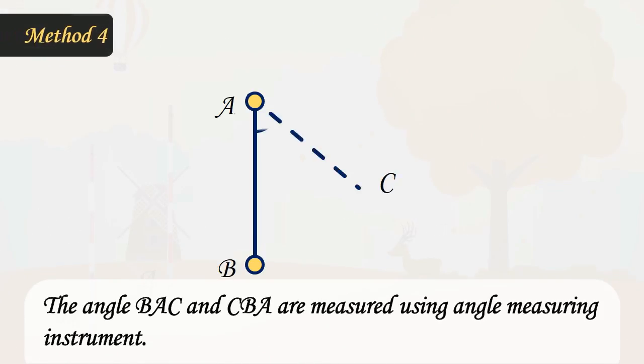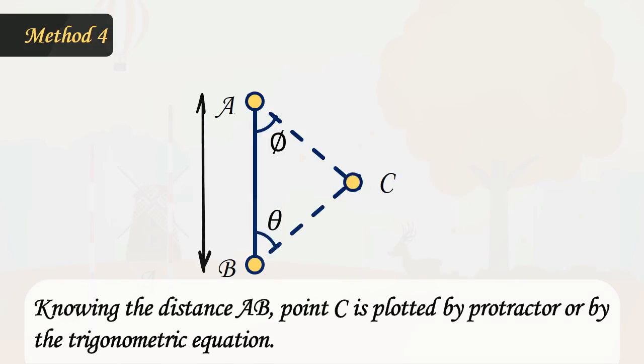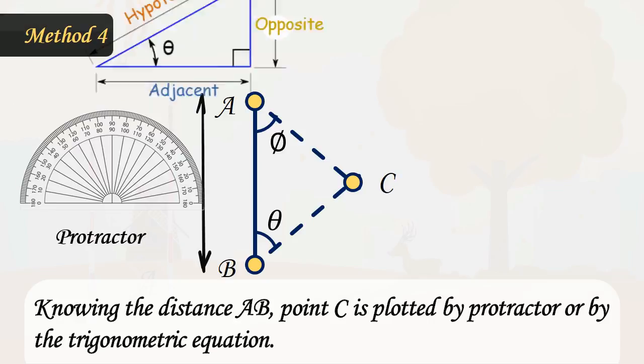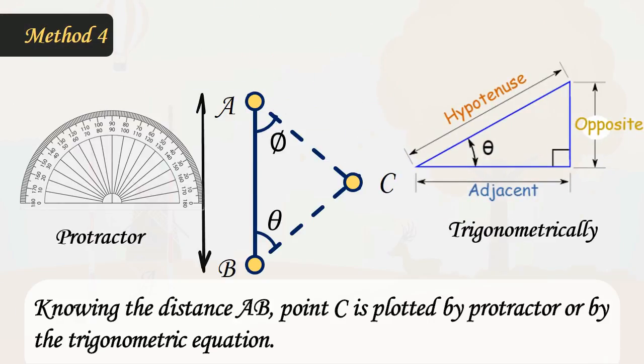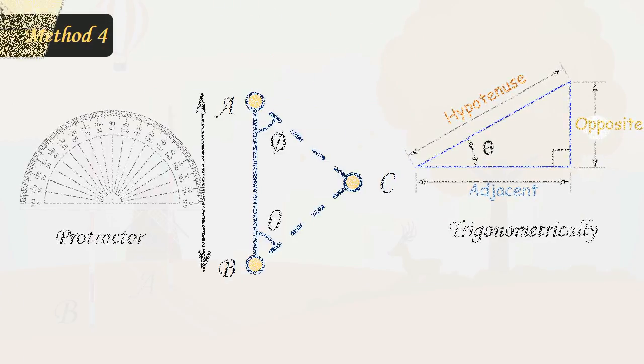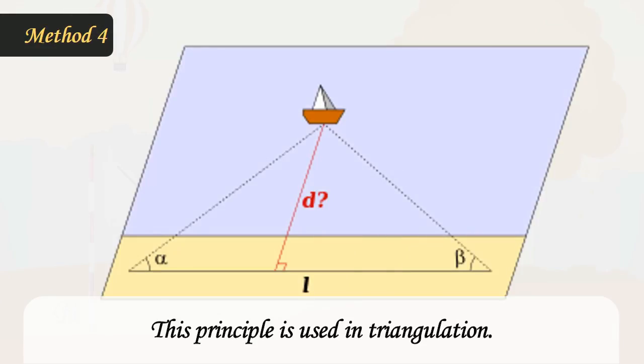Method 4: The angles BAC and CBA are measured using an angle measuring instrument. Knowing the distance AB, point C is plotted by protractor or by trigonometric equation. This principle is used in triangulation.